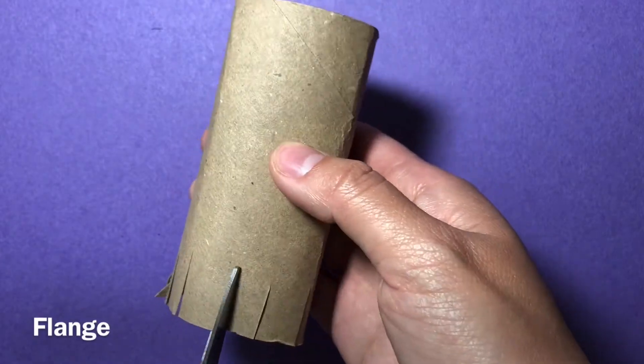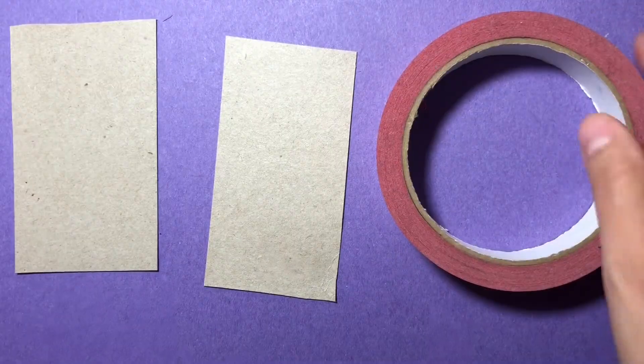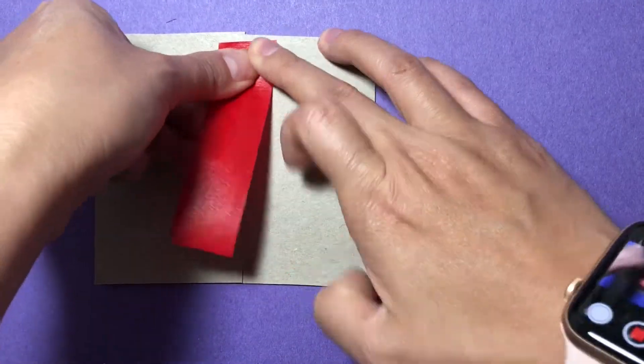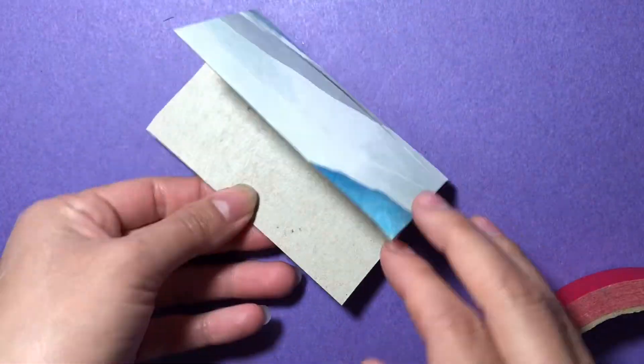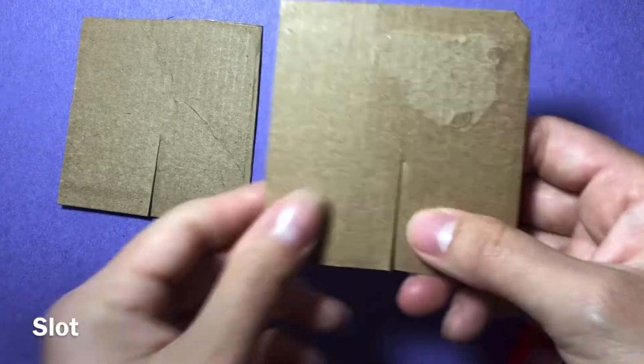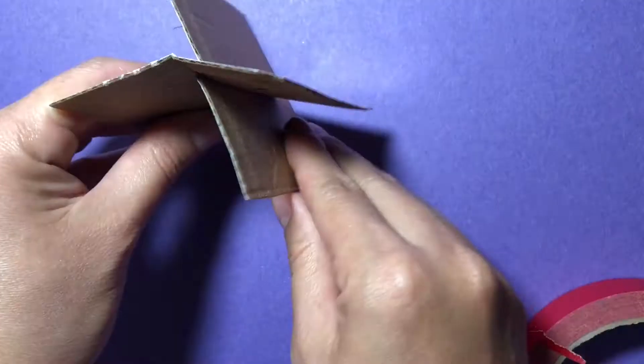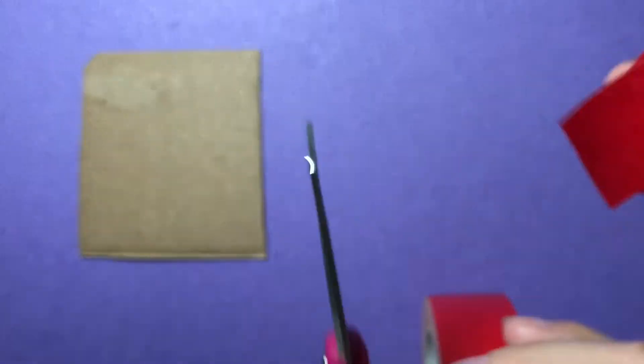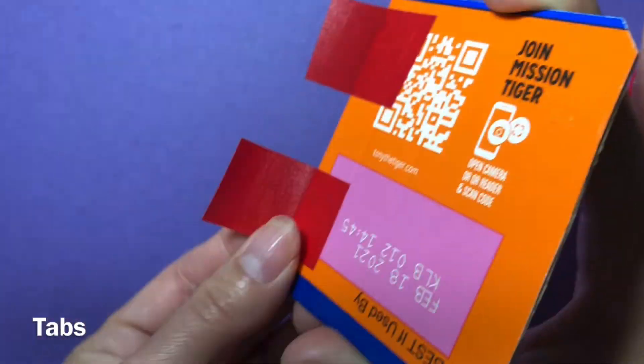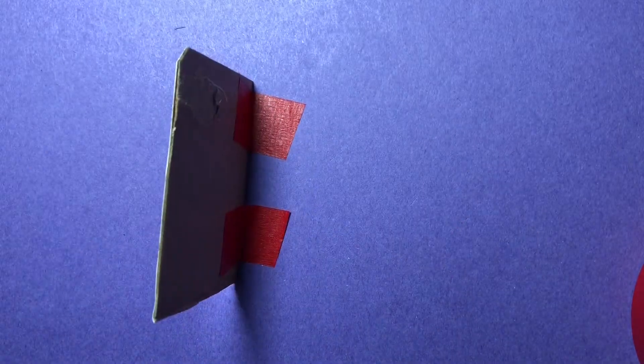A flange is where you just cut little slices all the way around and flatten it out. An L-brace is where you have two pieces put together with tape. A slot is where you cut two different pieces and slide them in to connect. A tab is where you use tape to hold a piece of your sculpture to the base. You can also use glued down cardboard if you do not have tape as a substitute.